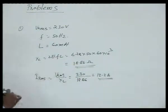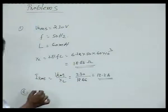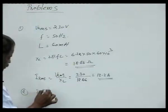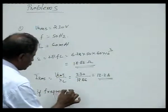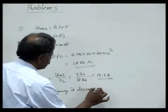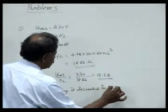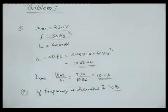Very simple problem — we calculate the XL value and the RMS value. But an important part of this is: when frequency changes, what will be the effect on the current? If frequency is decreased to 20 hertz — in the beginning it was 50 hertz and now it is reduced to 20 hertz — what happens in this case?